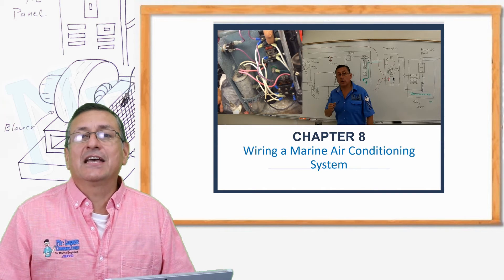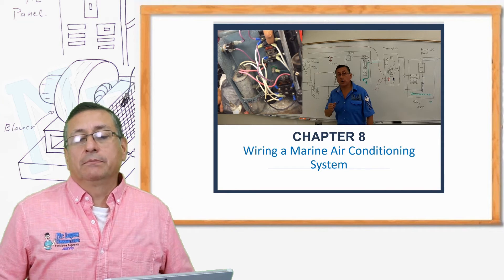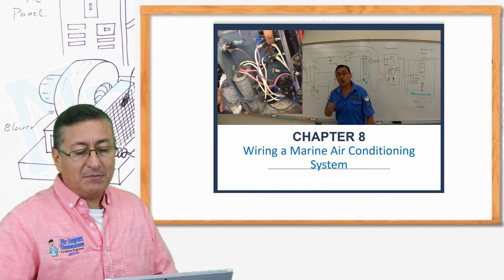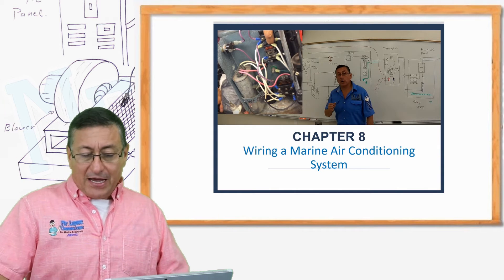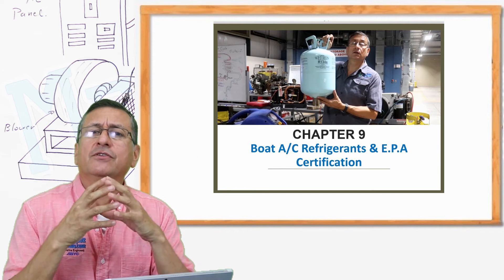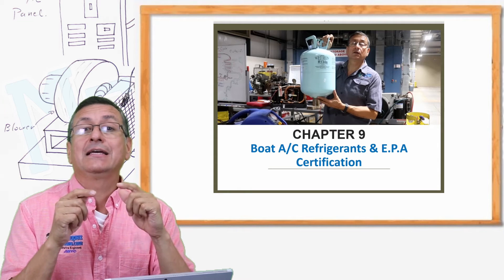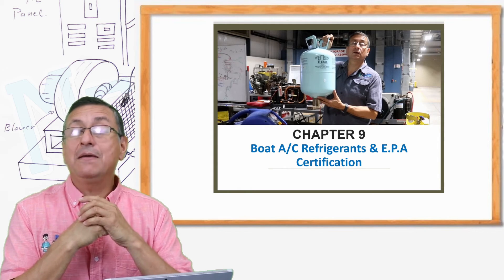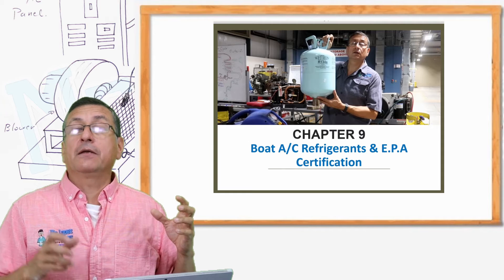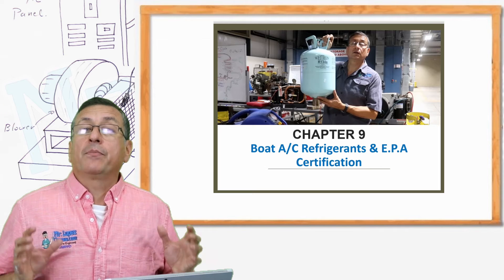That is a nice episode — I spent a lot of hours preparing it. I hope you enjoy it. This is how to do the wiring in an air-conditioned system in chapter eight. In chapter nine, we are going to analyze the refrigerants, the different types of refrigerants used in marine applications, and we are going to take the EPA certification in order to buy, replace, and recover refrigerant in a professional way.